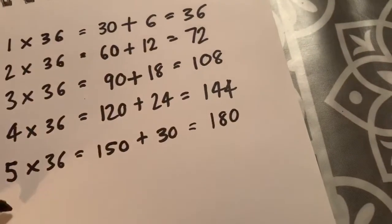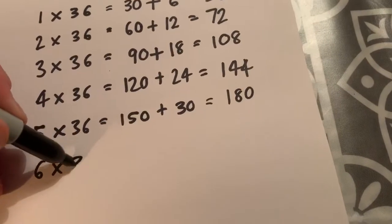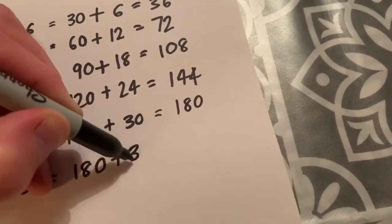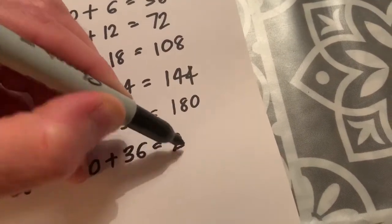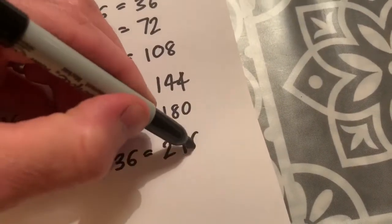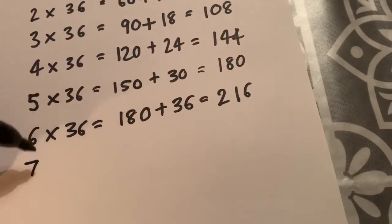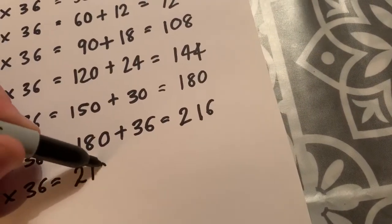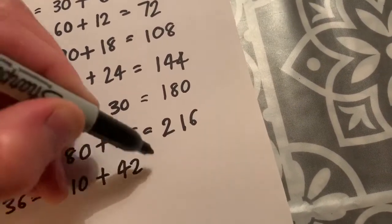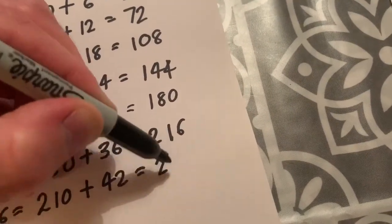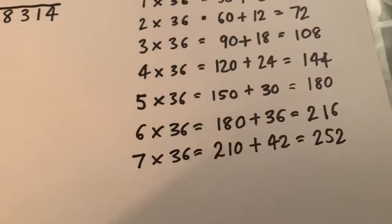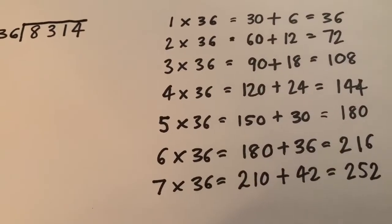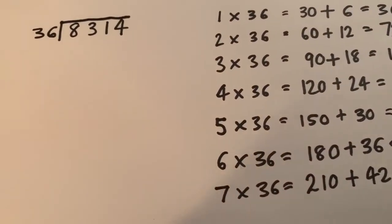180, 6 times 36, 180 plus 36 equals 216. I'll do it up to 7 this time. 7 times 36, 210 plus 42, 252. As I said, really important that we don't rush that part. Get your fact box done first of all, because after that it becomes much, much easier.